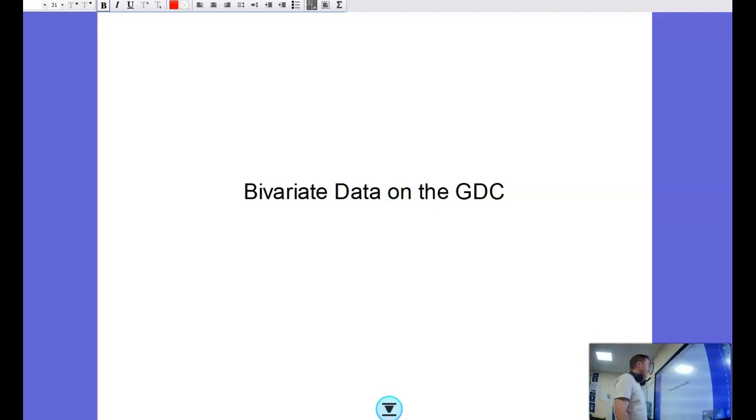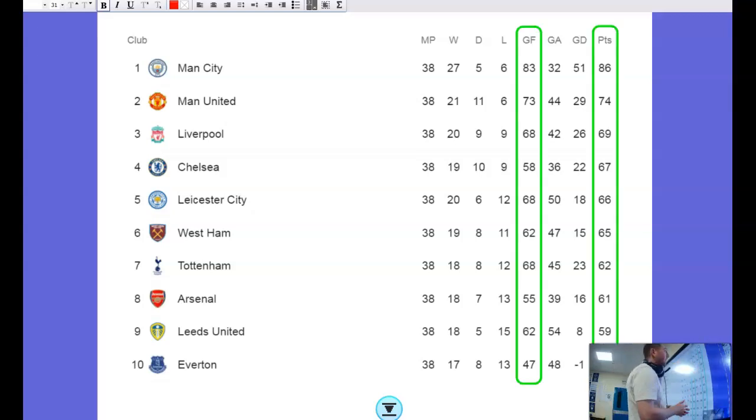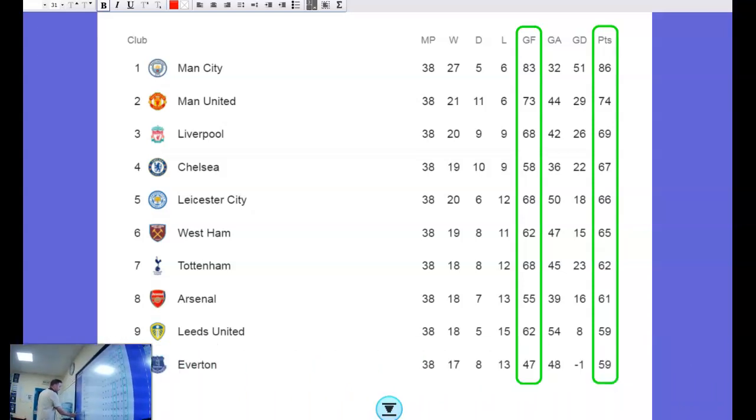Hello maths fans, let's look at bivariate data scatter graphs on the graphical display calculator. I'm going to be looking at data from the Premier League 2021 and I'm going to find out what the link is, how strong a correlation there is between goals for and the points. So I'm going to enter this data into my GDC and I'm going to find out how much of a link there is between goals for, the number of goals scored, and the number of points gained over the whole season.